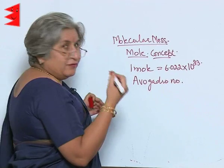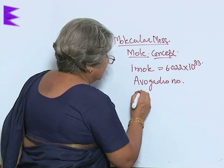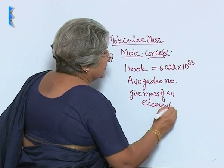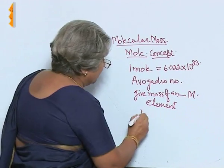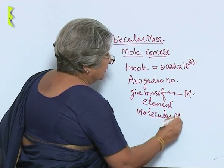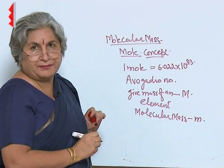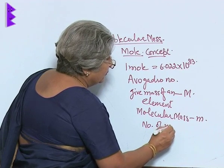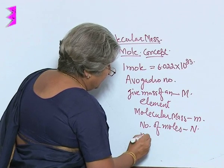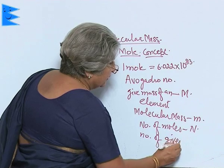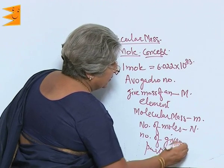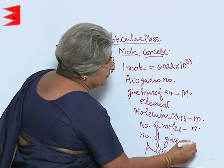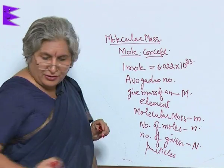If we want to denote a given mass of an element, it will be denoted as capital M, and the molecular mass will be small m. The number of moles will be small n, the number of given particles will be capital N, and Avogadro's number will be N₀.